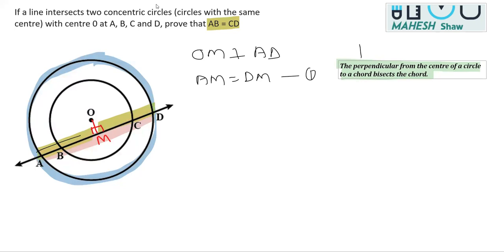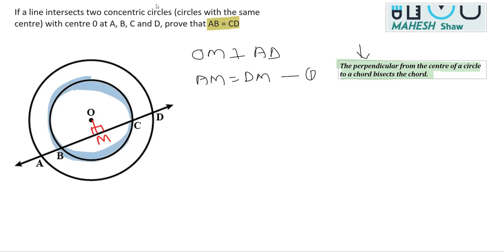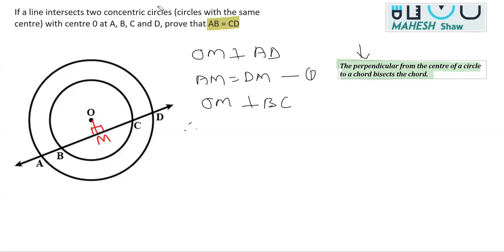Now consider the smaller circle. Here, BC is a chord of this circle, and OM is again perpendicular to BC. Using the same property — perpendicular from the center bisects the chord — we get BM = CM. We mark this as Equation 2.